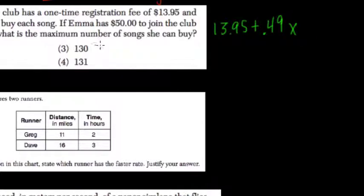This is an inequality problem because the total cost of membership and songs has to be less than or equal to $50. That's how much she can spend.